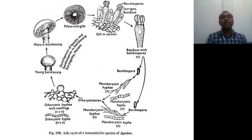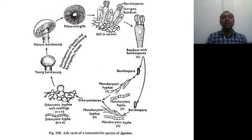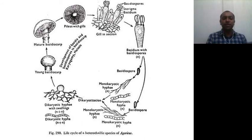When we take a section of the gill, you see that the trama is the middle layer, then you have the sub-hymenium followed by the hymenium layer. In the hymenium you get the sterigmata along with the basidiospores. The basidium is also present, and when we single out one basidium with basidiospores, you see that the spores are discharged along with a droplet of liquid.